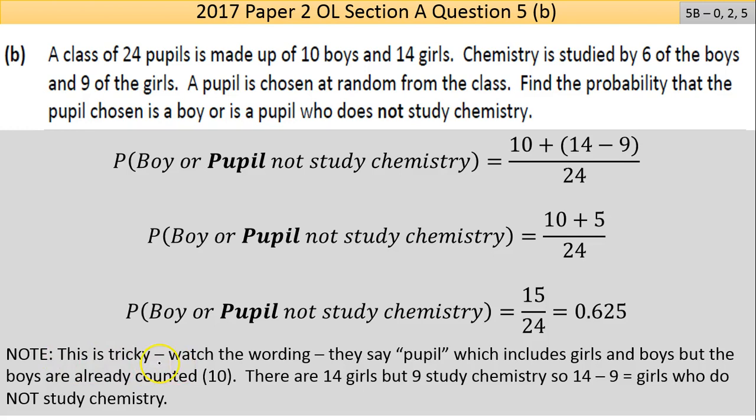Let's go over it again because this is tricky. Pupil could be boy or girl, so when they say pupil they include boys and girls, but the boys have already been counted in the scenario—that's the 10 boys here. So we're focused on the girls now who are left, and we're focused on those girls who do not study chemistry. There's 14 girls, 9 study chemistry, take them away, you're left with five. So five girls do not study chemistry. You have your boys 10 out of 24, pupils not studying chemistry is 5 out of 24.